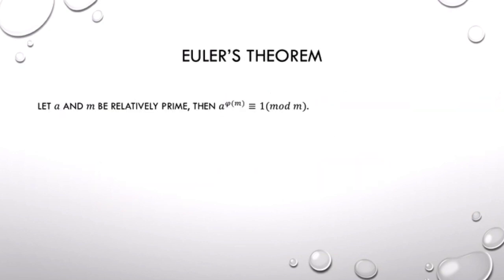Euler's theorem. If A and m are relatively prime, then we know that A to the phi of m is congruent to 1, mod m.